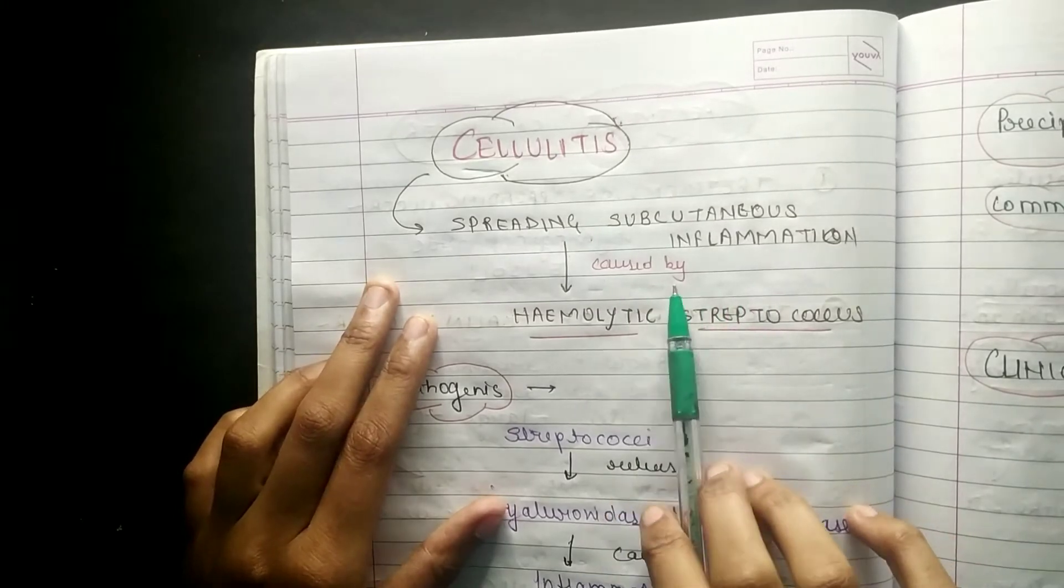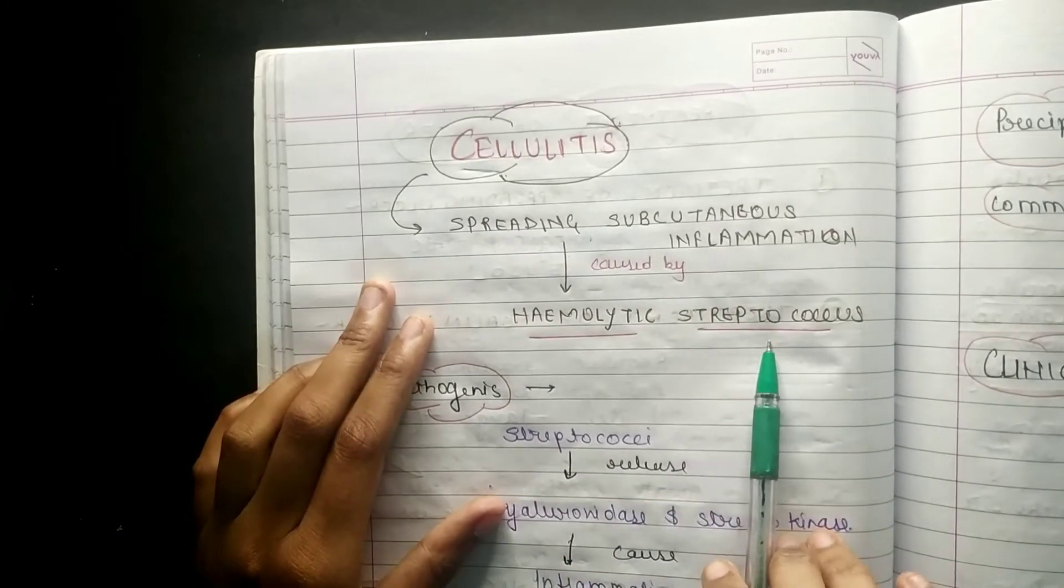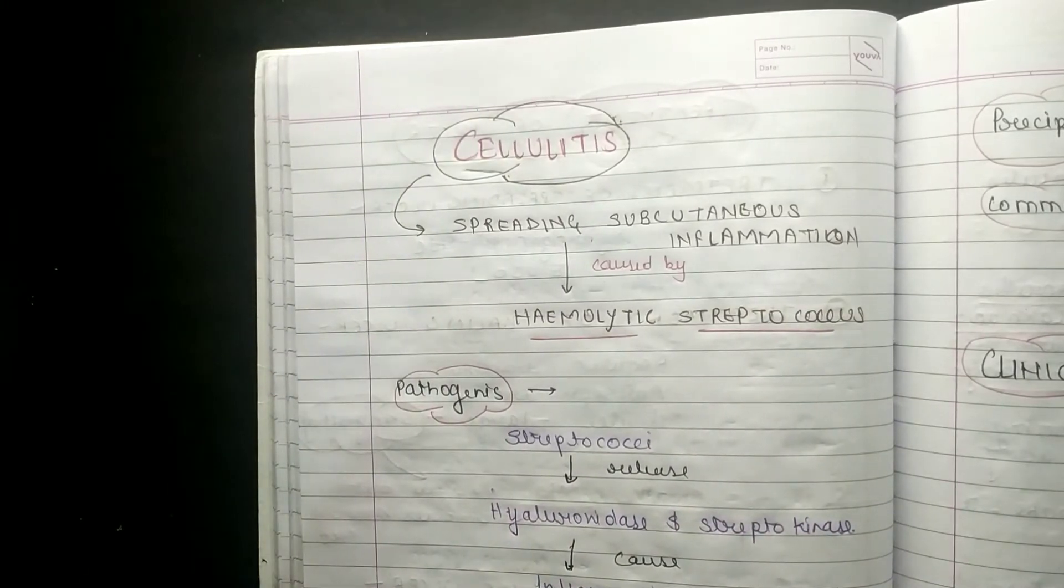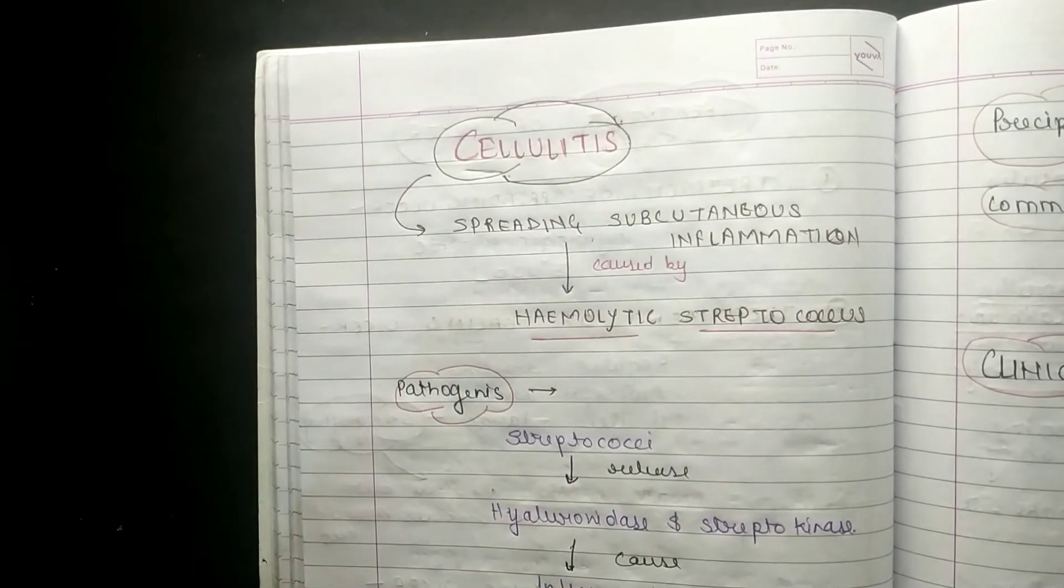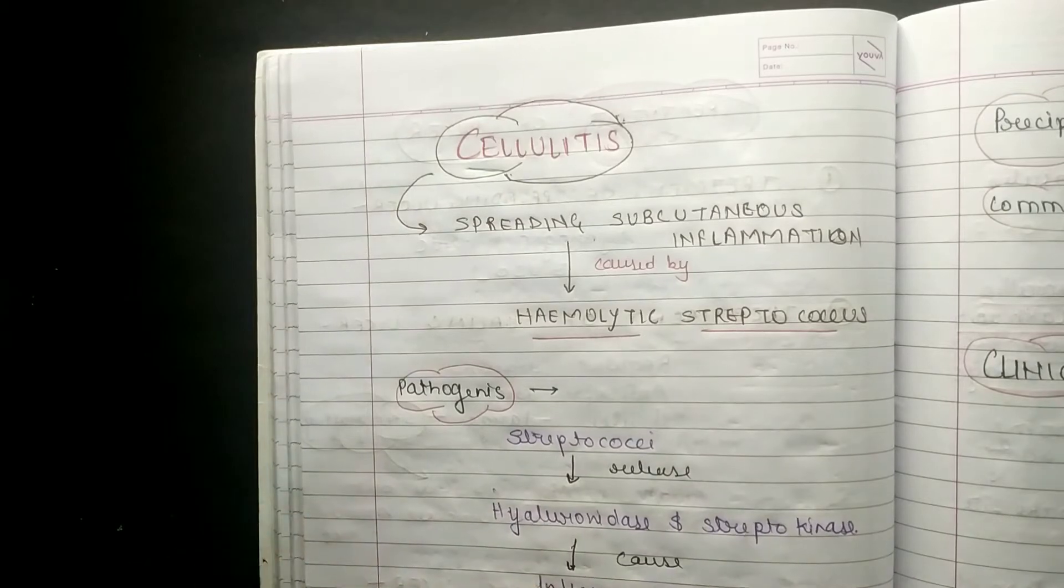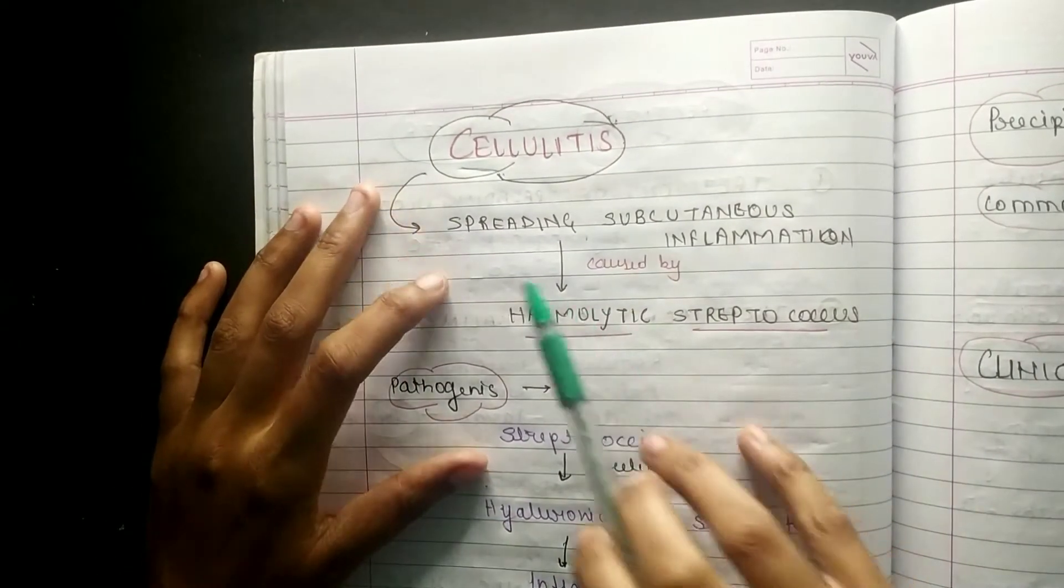Cellulitis is spreading subcutaneous inflammation caused by hemolytic streptococcus. This point is very important in viva. Generally in viva, examiners ask what is the causative agent of cellulitis. So remember it is caused by hemolytic streptococcus.